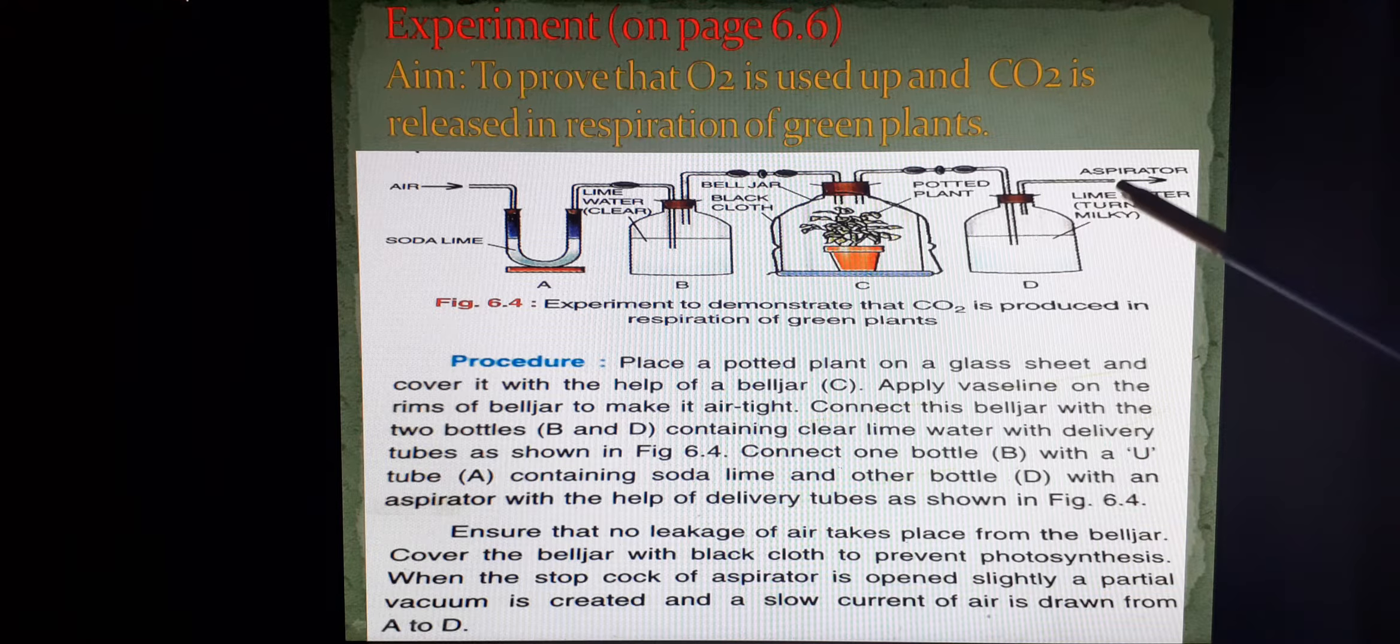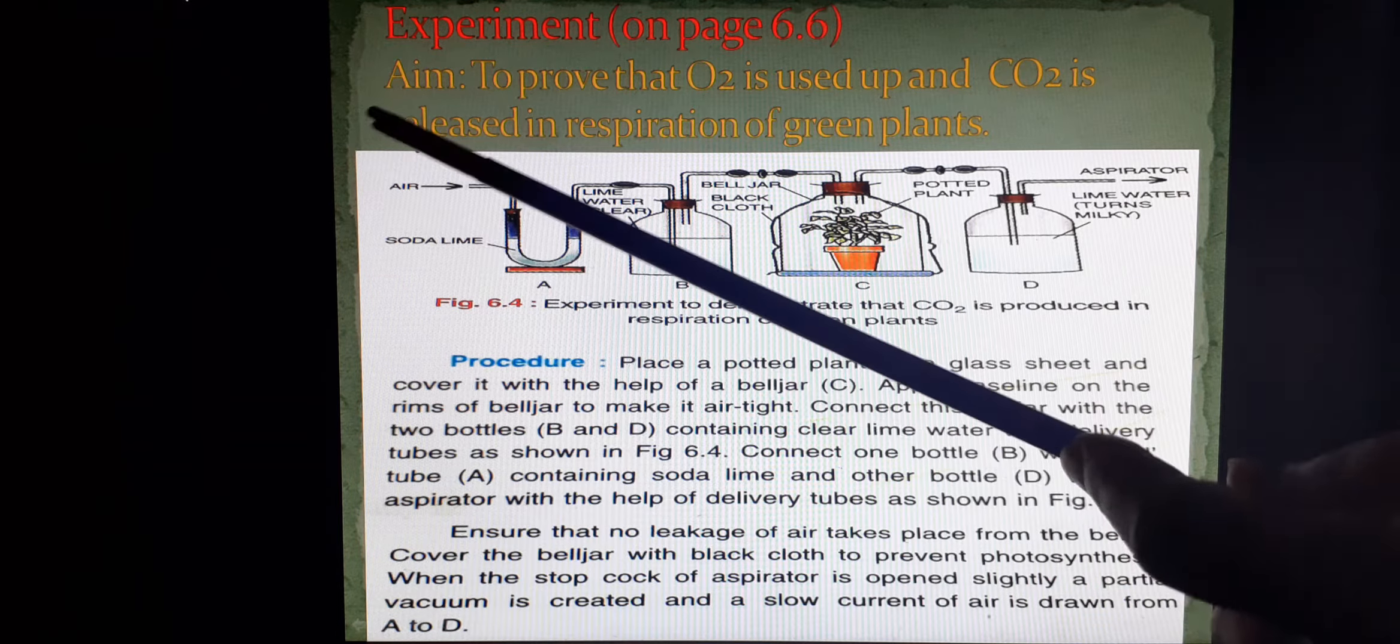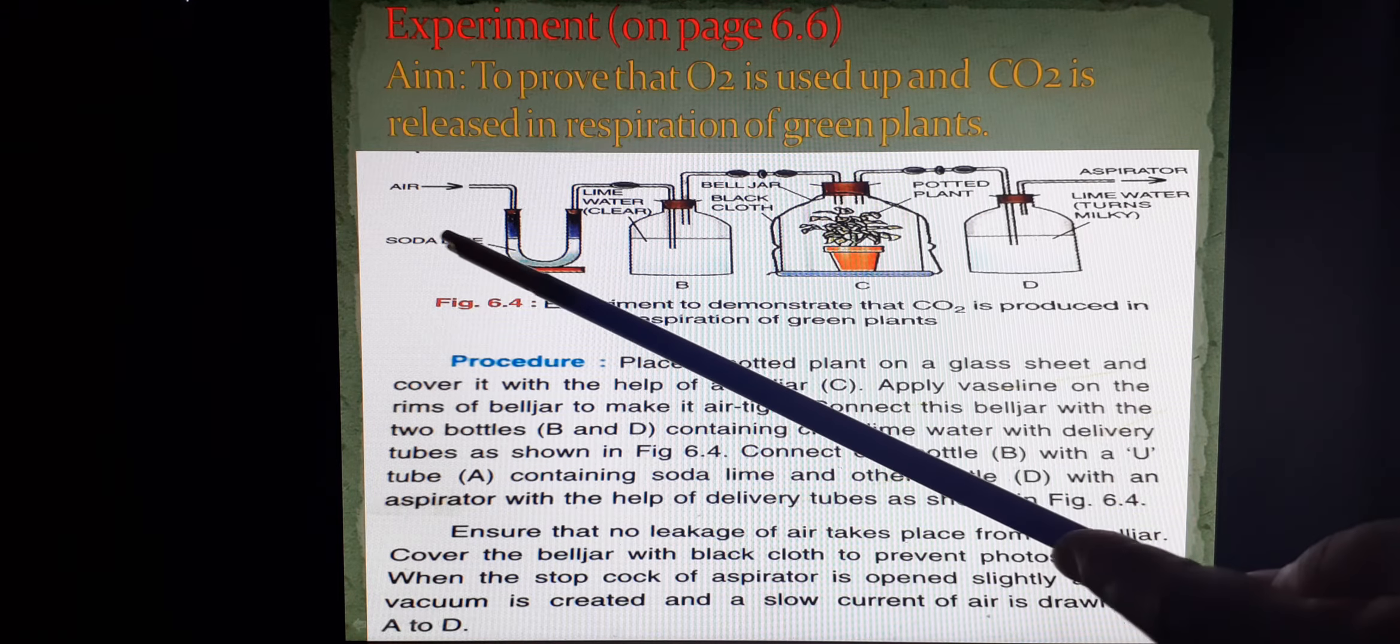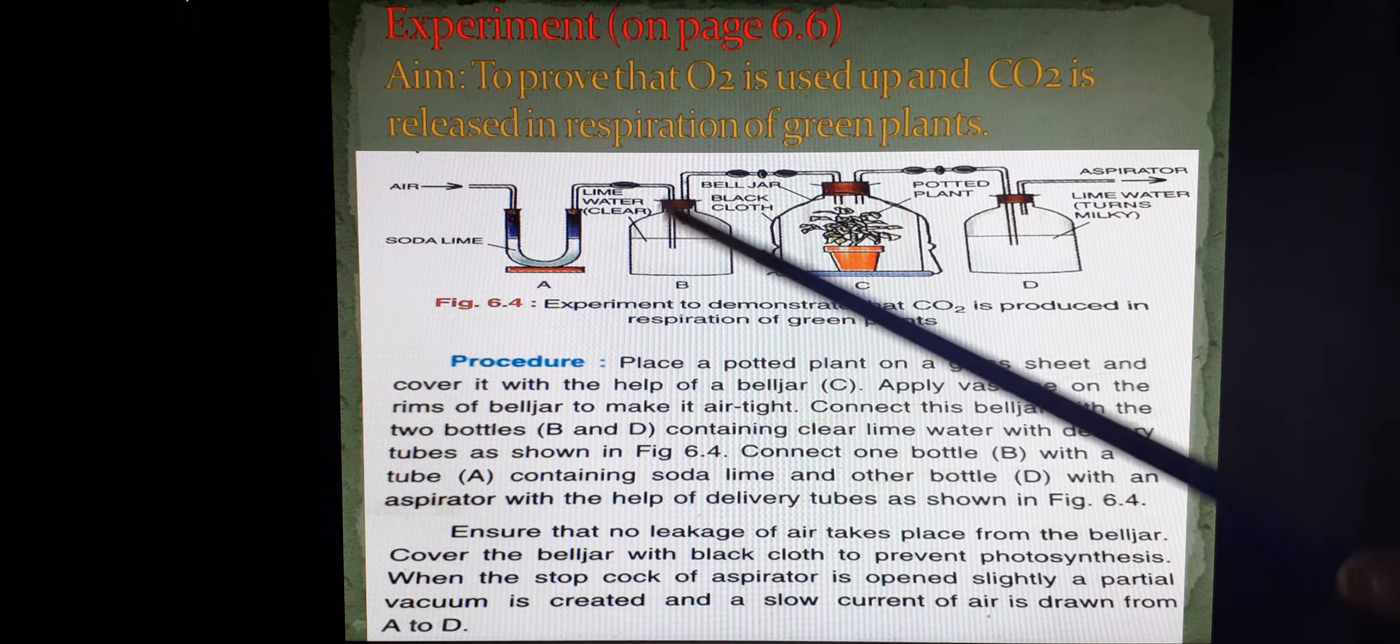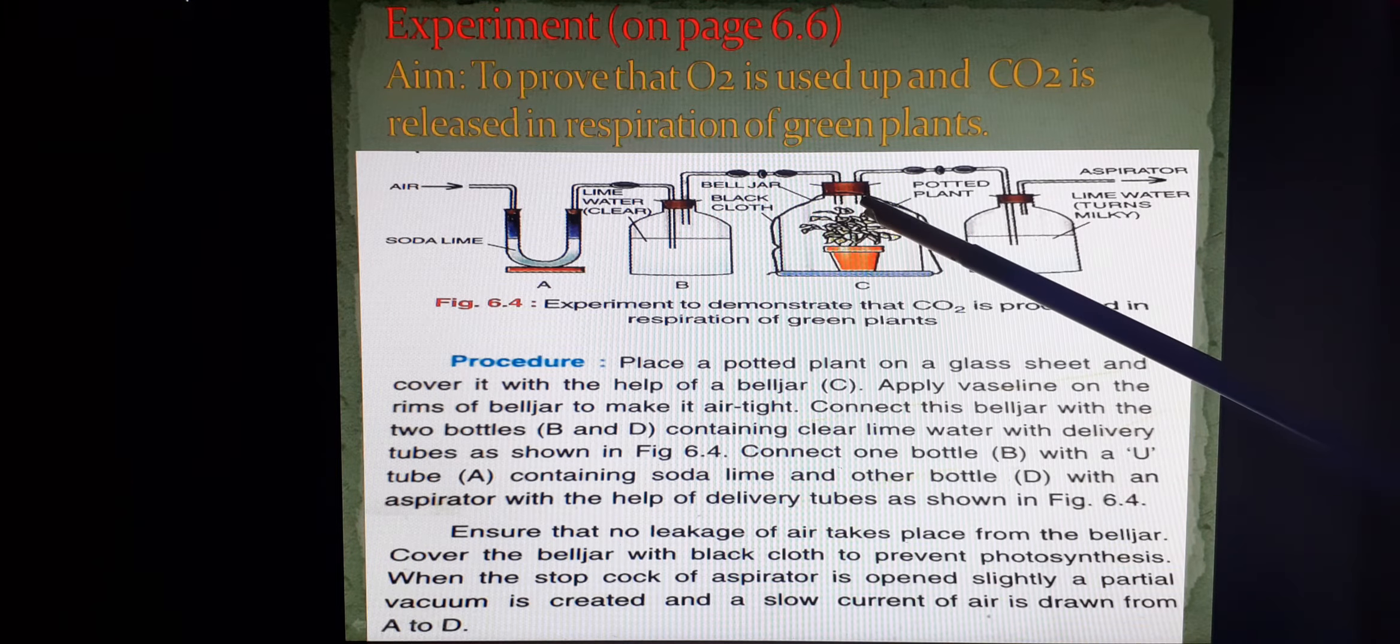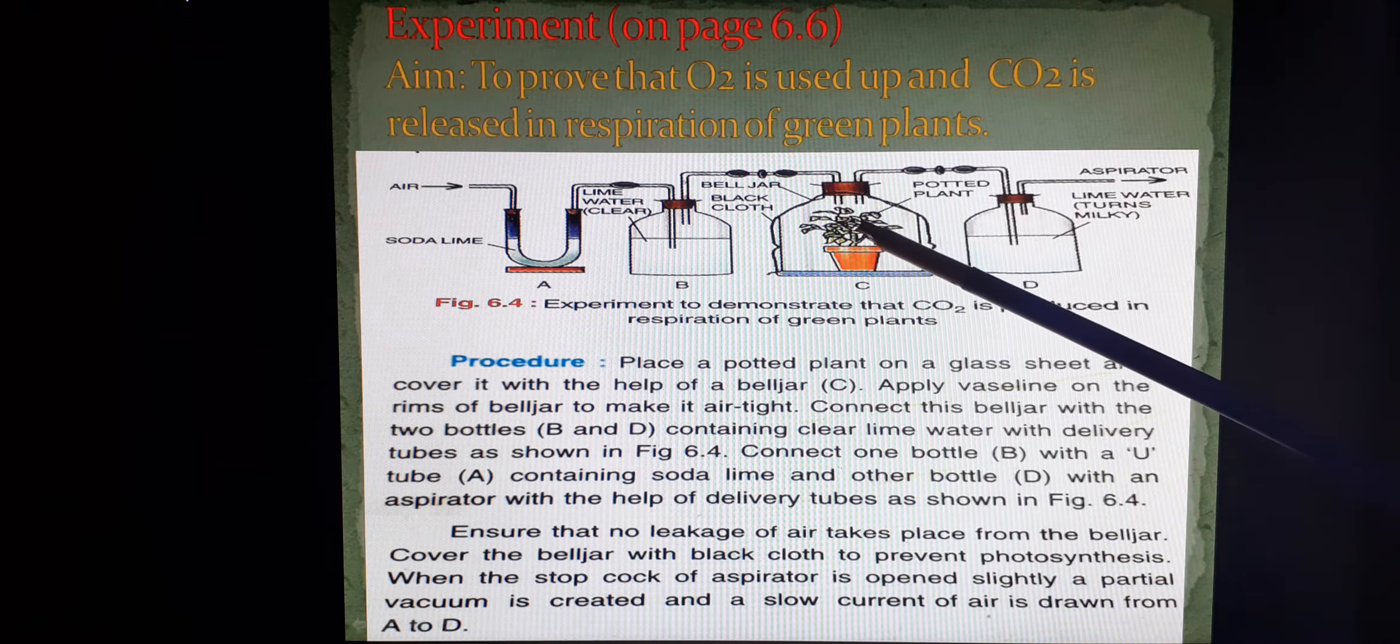To begin the experiment, we remove the stopper and the air flow moves from setup A to B to C to D. In setup A, the air which is entering is loaded with oxygen, carbon dioxide and nitrogen. Carbon dioxide is absorbed by soda lime. The air which moves from A to B to C is now free from carbon dioxide, only oxygen and nitrogen, which is proved by the lime water which remains clear. The air entered over here is used by the plant for respiration. When plant is respiring, it releases carbon dioxide.